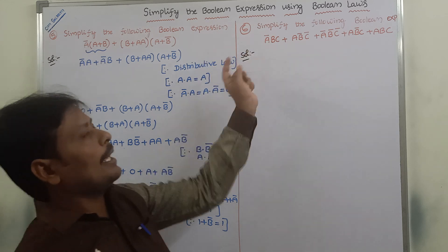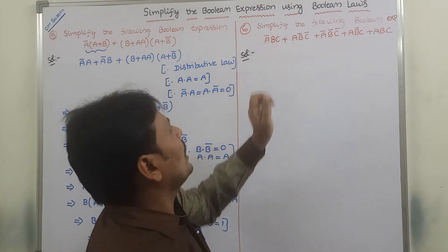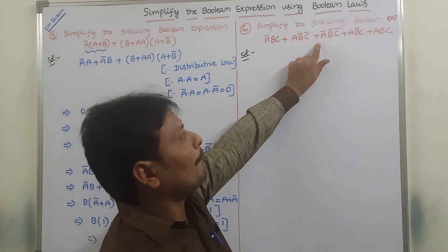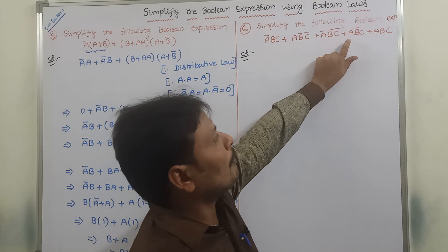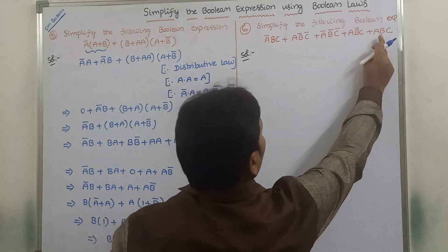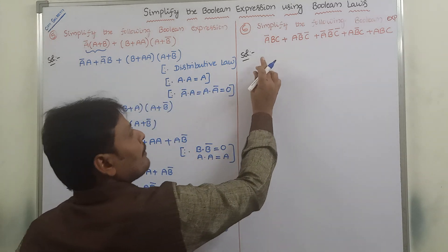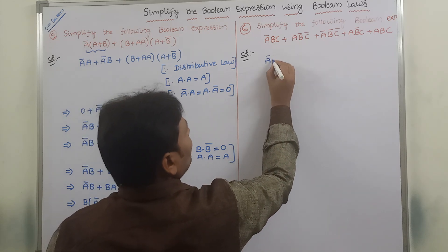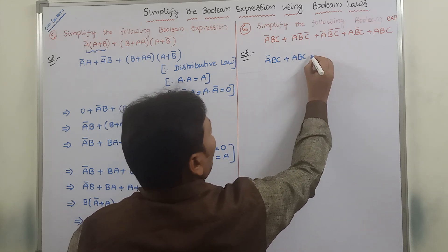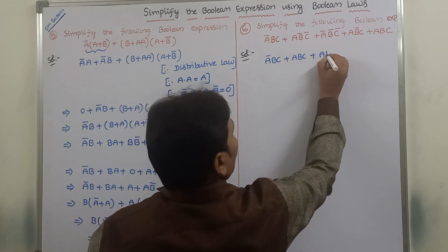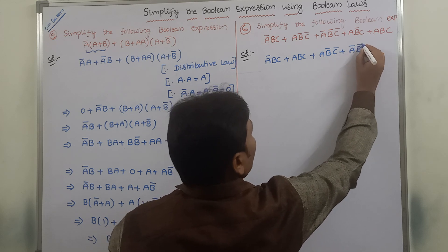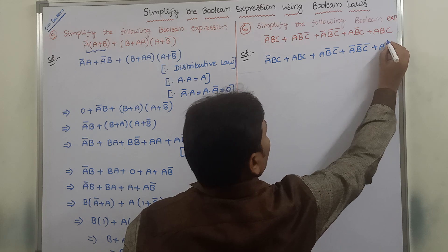Next, we go to another example problem. Simplify the following Boolean expression: A-bar·B·C plus A·B-bar·C-bar plus A-bar·B-bar·C-bar plus A·B-bar·C. Now first I am taking the first term and one other term and putting them in one place. So A-bar·B·C, then A·B-bar·C-bar, and the remaining terms are A-bar·B-bar·C-bar plus A·B-bar·C.